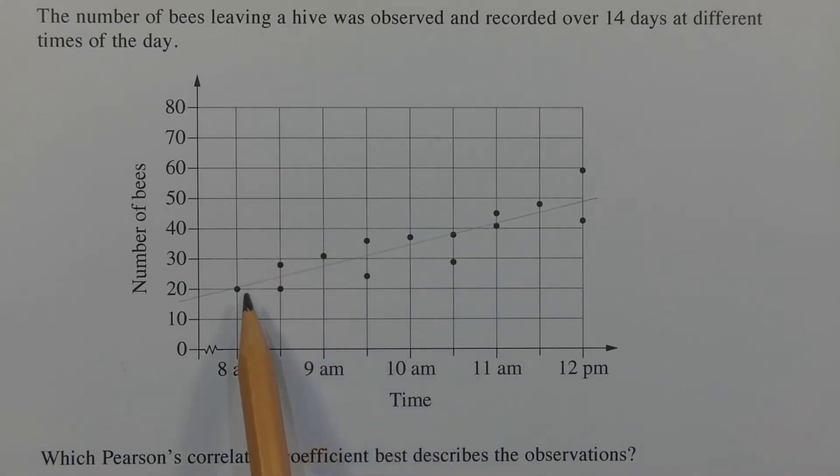And looking at the distance between the points and the line itself, we can see that the points are reasonably close to the line, which indicates a reasonably strong correlation.